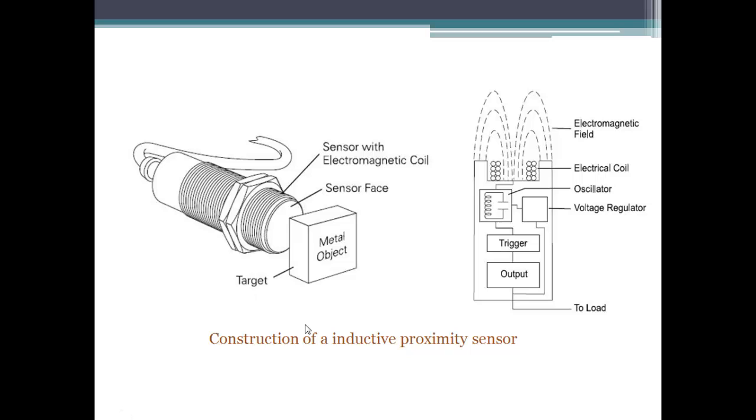An inductive proximity sensor consists of four components: the coil, the oscillator, the trigger circuit, and the output circuit.